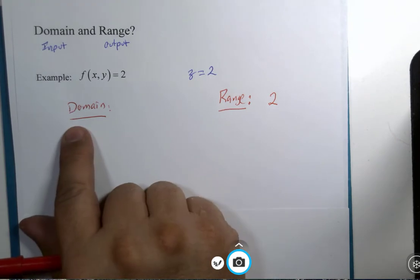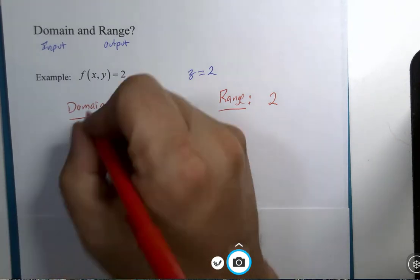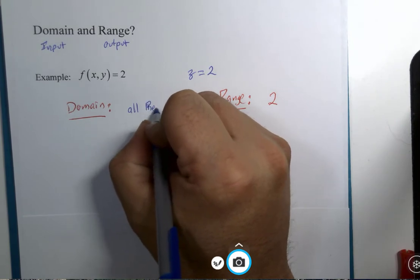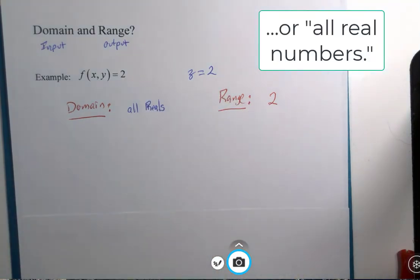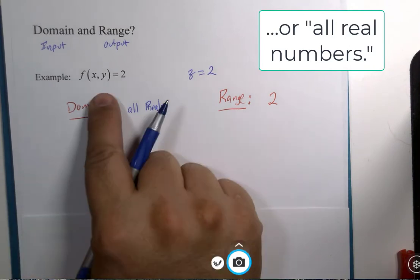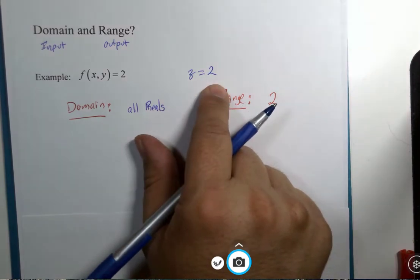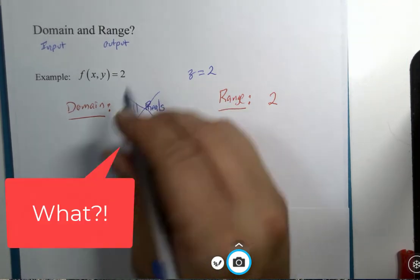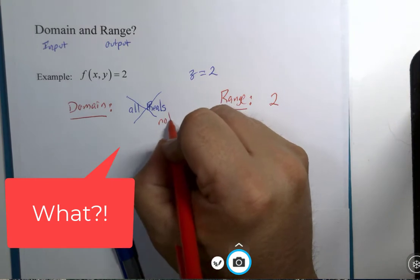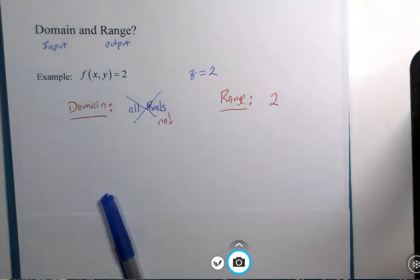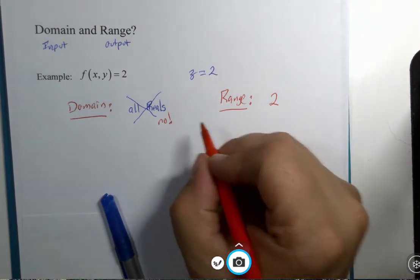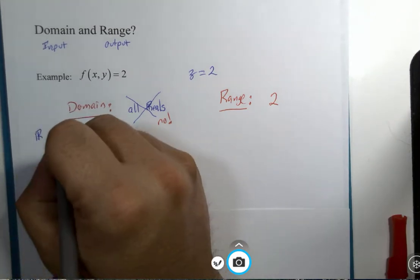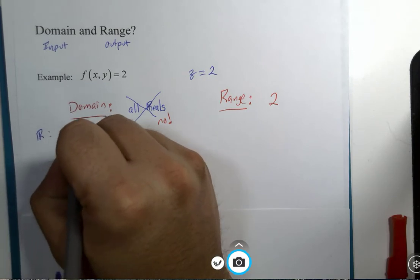So domain. If you were to write down all reals because your algebra brain says there's no strange algebra here, z equals 2, you can put anything in you want. The answer to this is no.